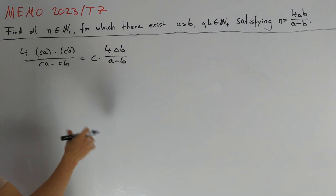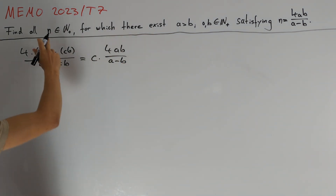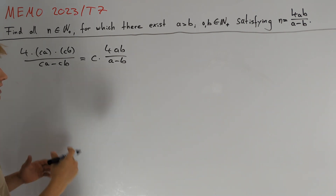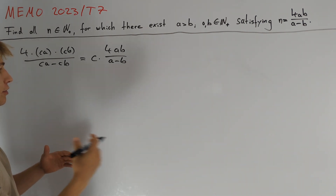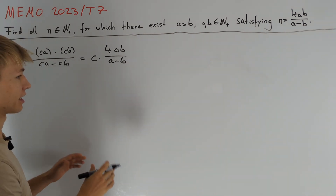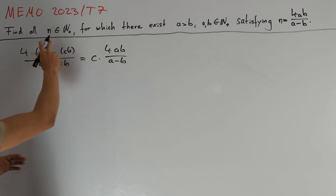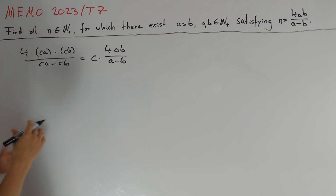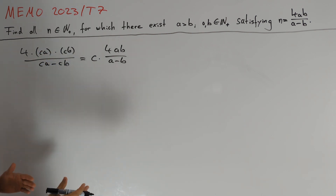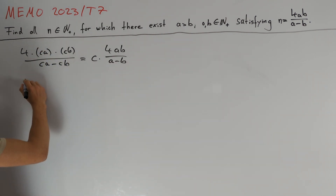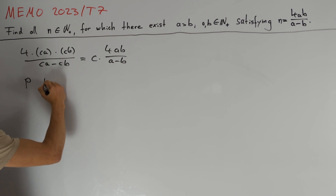This means that if we find a solution n, then all multiples of n work. Therefore we are motivated to take a closer look at numbers for n that don't have many divisors. The perfect choice for this is a prime number p.